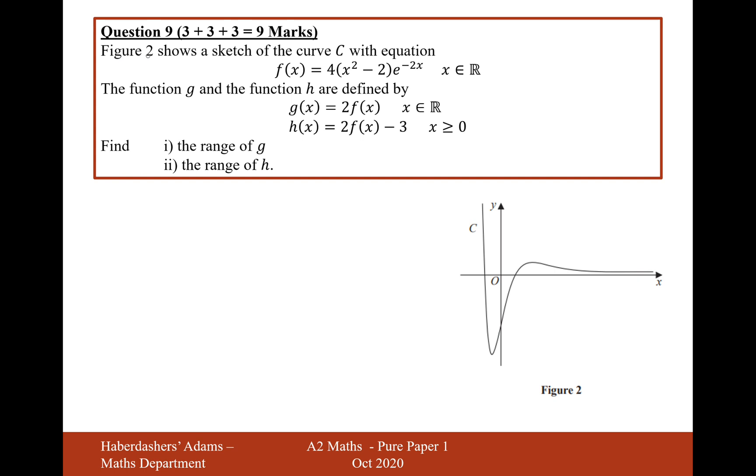Let's now move on to part C. So figure 2 shows a sketch of curve C with the equation f(x) equals what we've just worked with. The function g and the function h are defined by g(x) equals 2f(x) and h(x) equals 2f(x) minus 3, but only where x is greater than or equal to 0. Find the range of g and the range of h. So what we might find helpful is those two minimum and maximum points that we had before. First one's going to be minus 1, minus 4e to the 2. And this one up here is going to be 2, 8e to the minus 4.